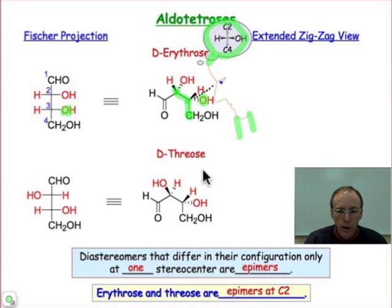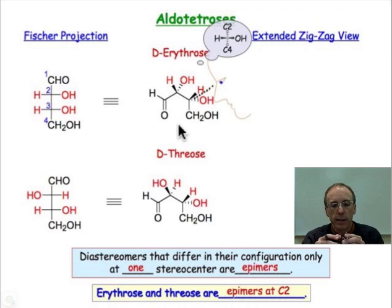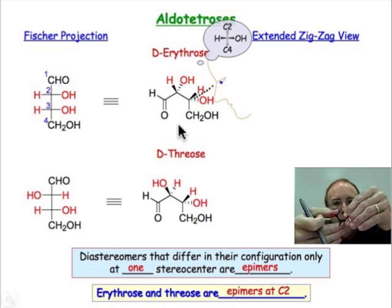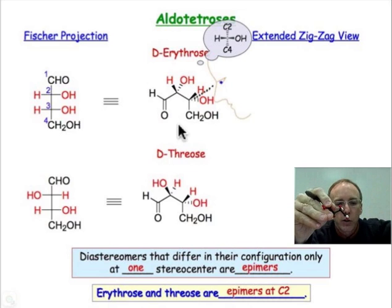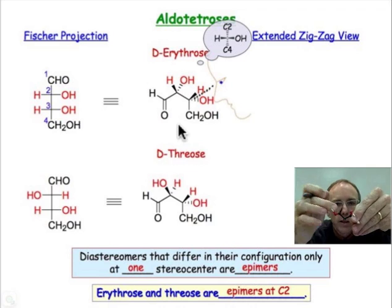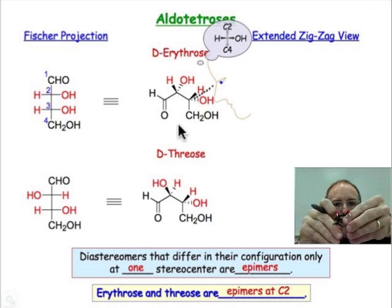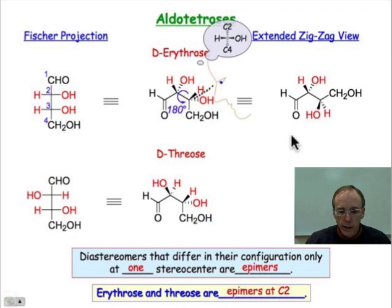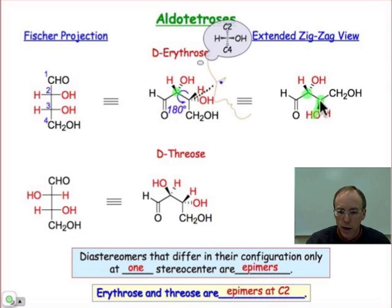C2 and C4 are at the top and bottom. That's not such a convenient way to represent it, so here's the Fischer projection view. The normal way we would treat such a model is to put it in a planar zigzag form. We're going to do a bond rotation about the C2–C3 bond. The aldehyde position is here and C4 is over here. All I did was take that convenient view and rotate about the C2–C3 bond to put it into a planar zigzag form.